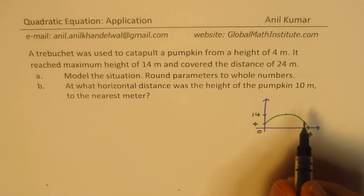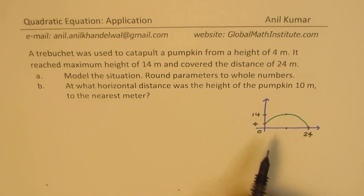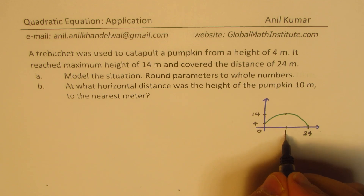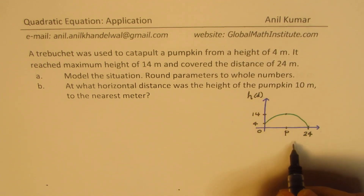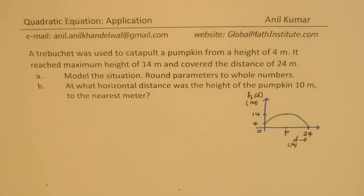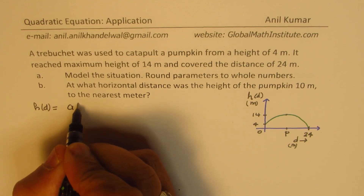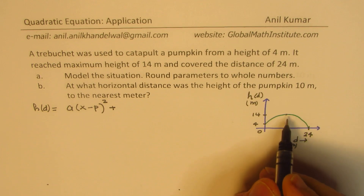Now we do have three points. However, we do not know the distance at which the maximum height occurs, so basically we have two complete points. The third point is kind of a partial point. We can write the height in terms of distance D. The height over distance equals A times (x minus P) squared plus the maximum, which is 14. Since this path is concave down, A will be negative, so we write minus A where A is positive.